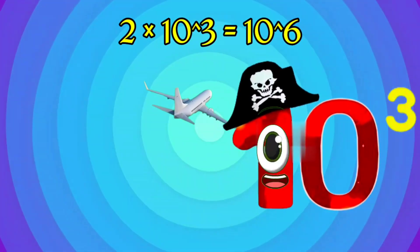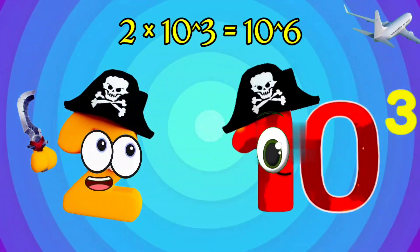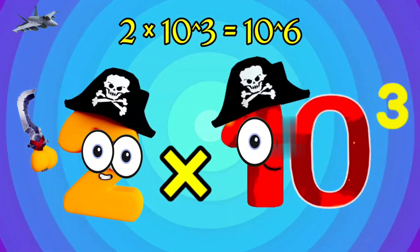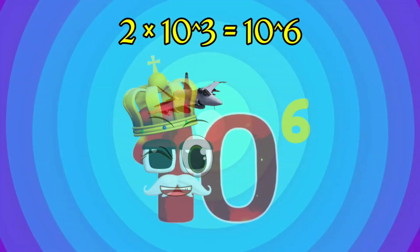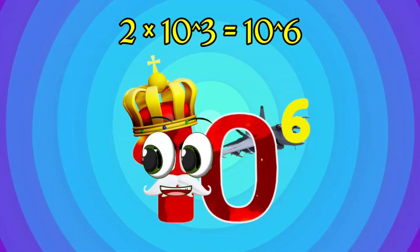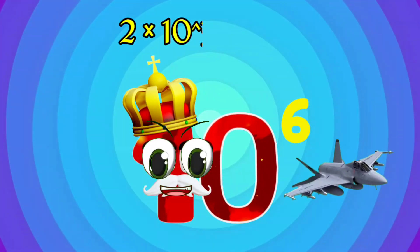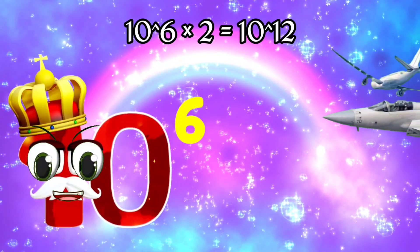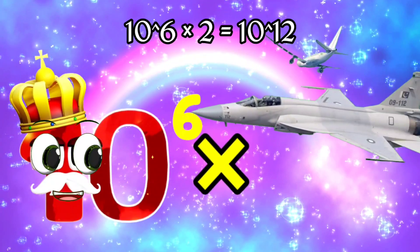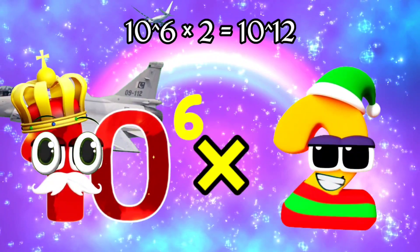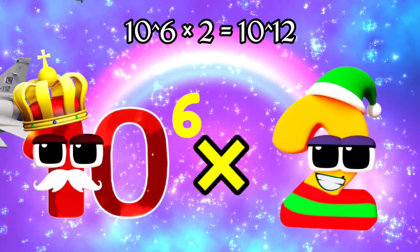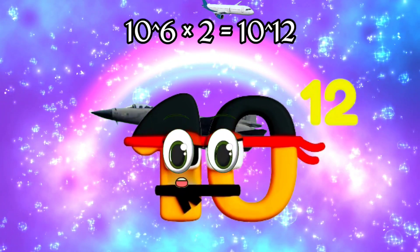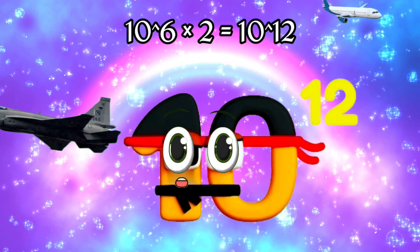I'm 1,000 and I've got 3 zeros! 2 times I'm 1,000,000 and I've got 6 zeros! Equals I'm 1,000,000 and I'm made up of 12 zeros!